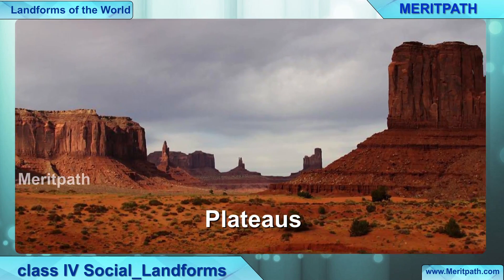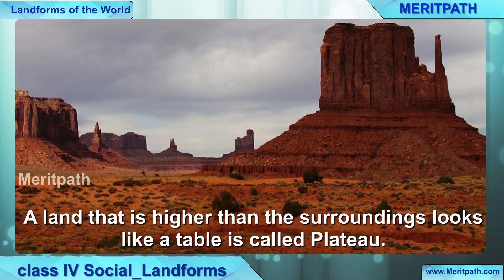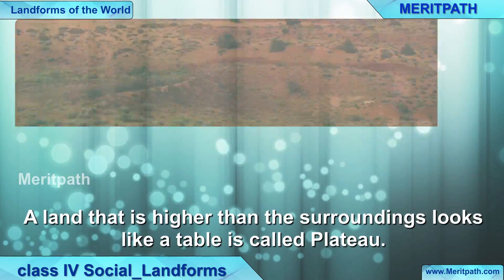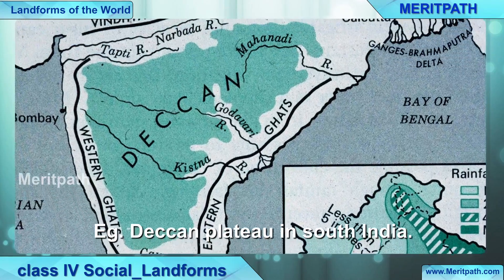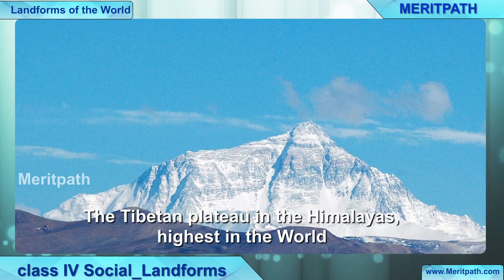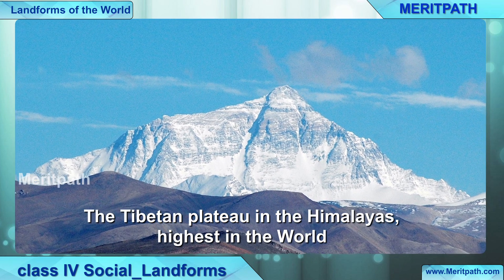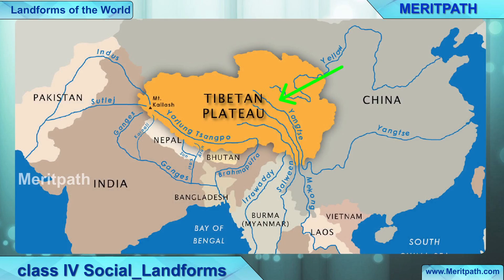Plateaus. How are plateaus formed? A land that is higher than the surroundings and looks like a table is called a plateau. It is raised slightly above the land. The Deccan Plateau is an example of a plateau, which is in South India. The Tibetan Plateau in the Himalayas is the highest plateau in the world.